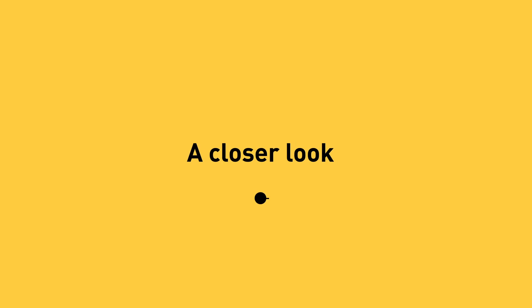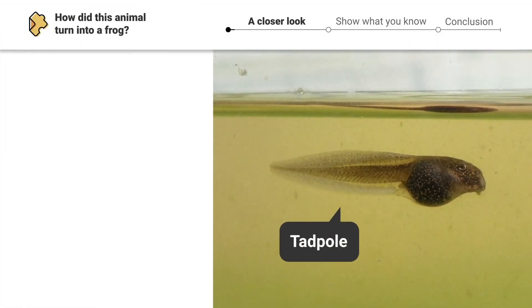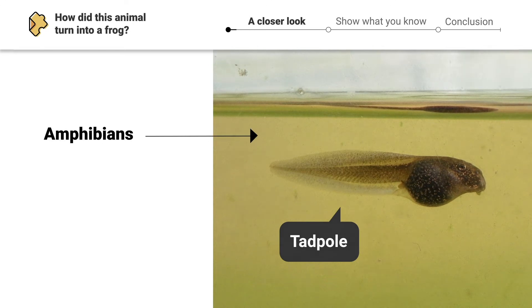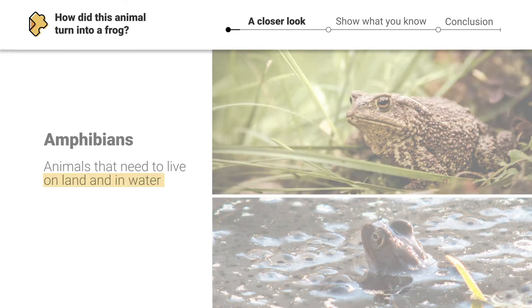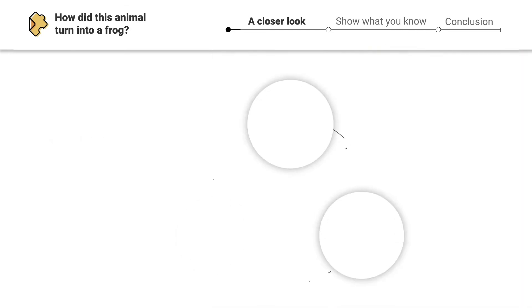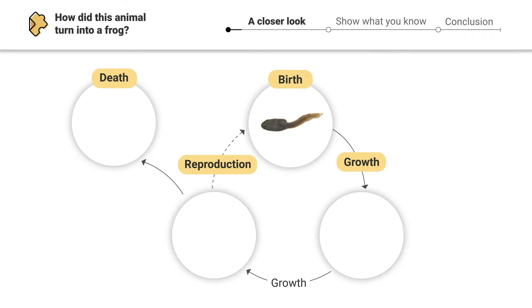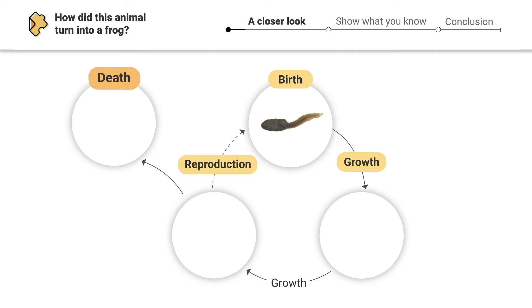This animal is a tadpole. These little creatures are amphibians, a group of animals that need to live on land and in water. Just like all plants and animals, tadpoles go through a life cycle where they're born, they grow, they reproduce, and they eventually die.